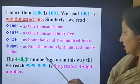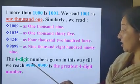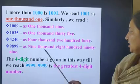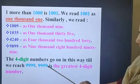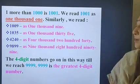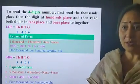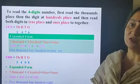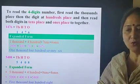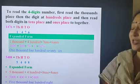The 4-digit numbers go on this way till we reach 9999. 9999 is the greatest 4-digit number. Children, now do you know how to read a 4-digit number? Okay, I will help you to read a 4-digit number.